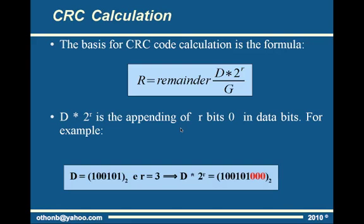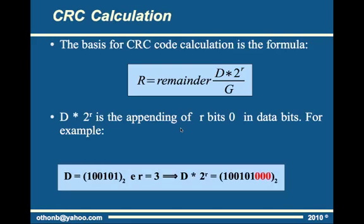See the example: D is equal to 1, 0, 0, 1, 0, 1 in binary and R is equal to 3. So D multiplied by 2 to the power R is equal to 3 bits of 0 appended to D.